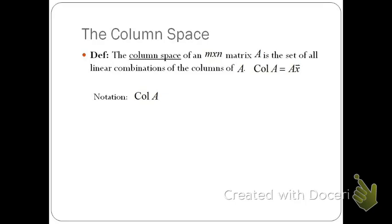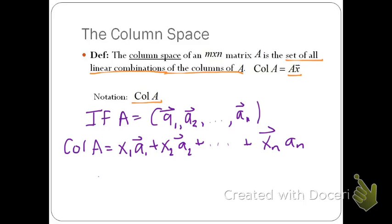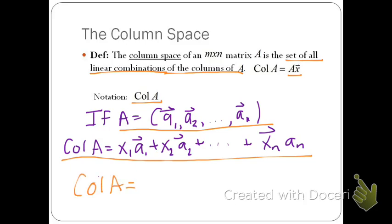Now we want to talk about the column space of an m by n matrix. The column space is the set of all linear combinations of the columns of A. The column of A equals the set Ax — we use the notation col(A). If A equals the set of vectors A1, A2 through An, then the column of A is the span of those vectors: col(A) equals the span of A1, A2 through An.